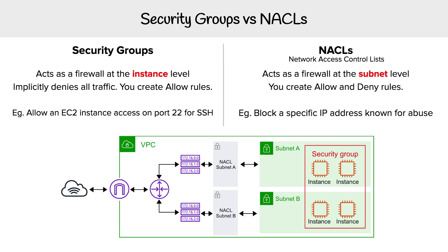Now with NACLs, you can have both allow and deny rules. The real utility here with NACLs is that you can block a specific IP address known for abuse, because you can have deny rules.